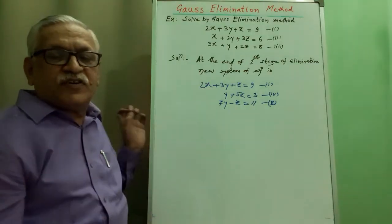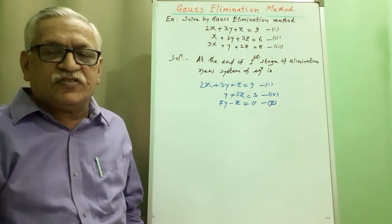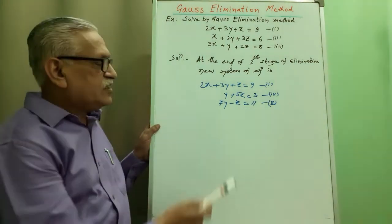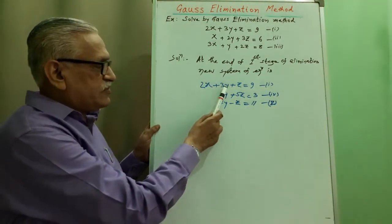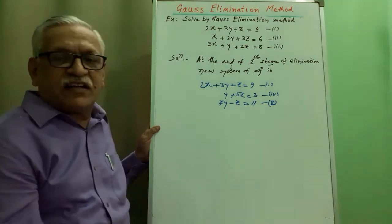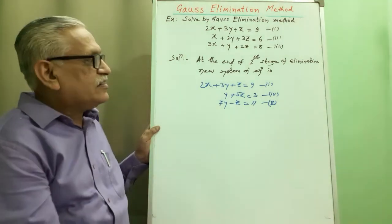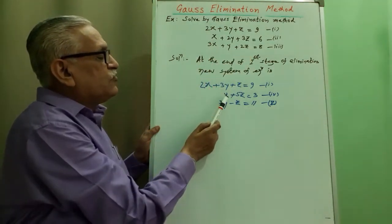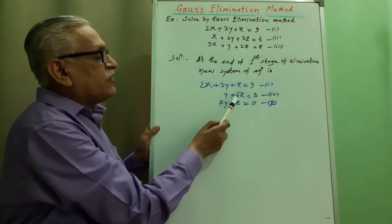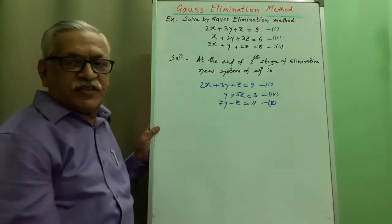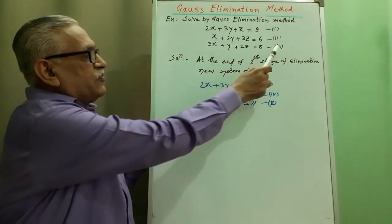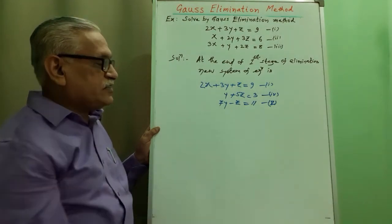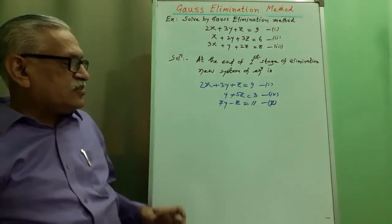At the end of the first stage of elimination, the new system of equations is: first equation unchanged — 2x plus 3y plus z equals 9; instead of equation 2 we have equation 4: y plus 5z equals 3; and at the place of equation 3 we have equation 5: 7y minus z equals 11.